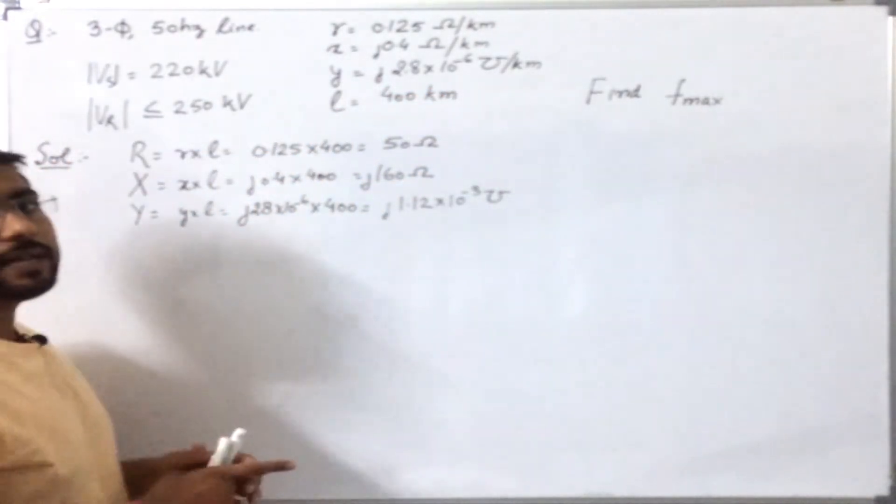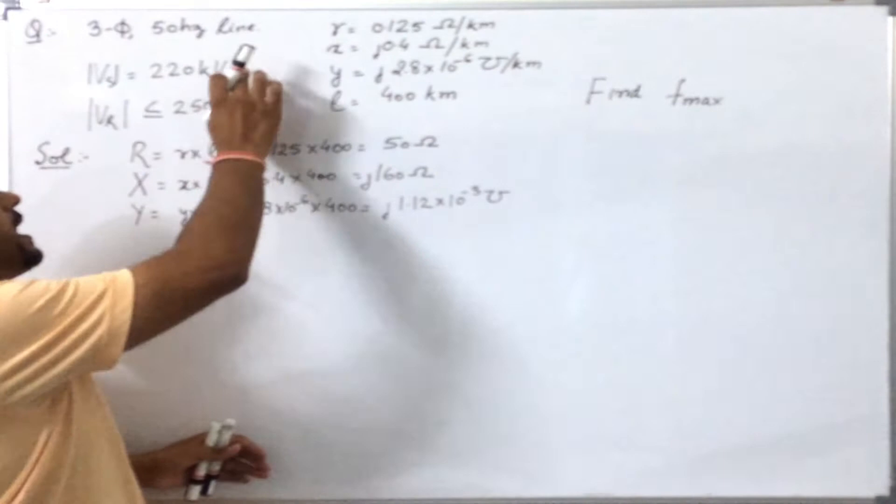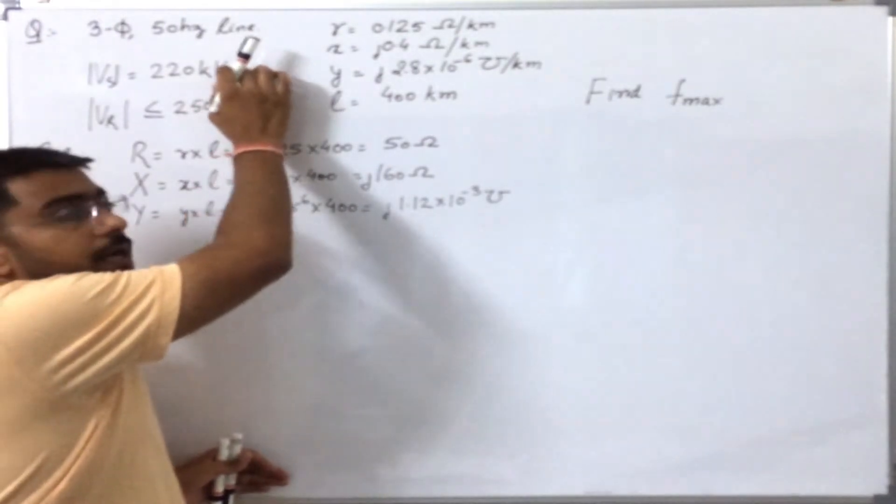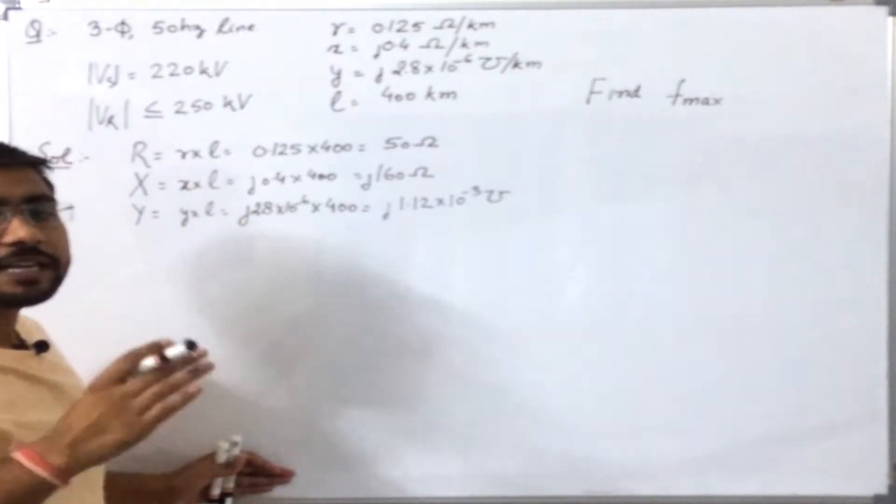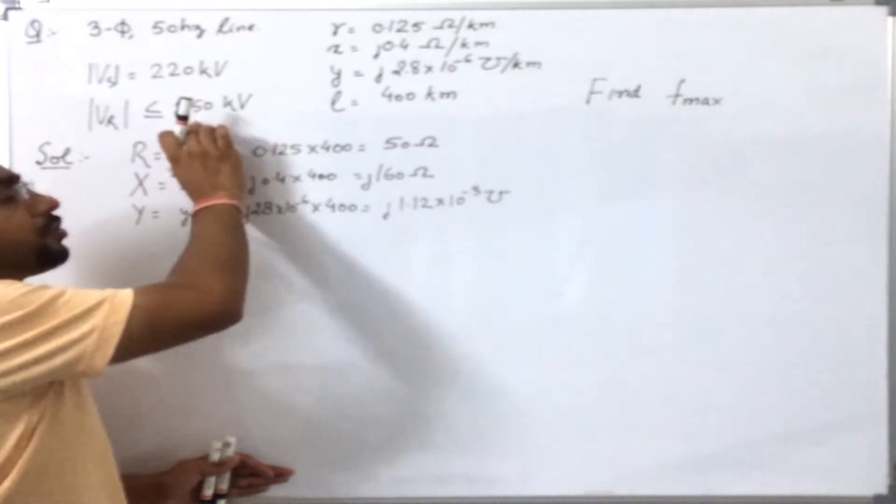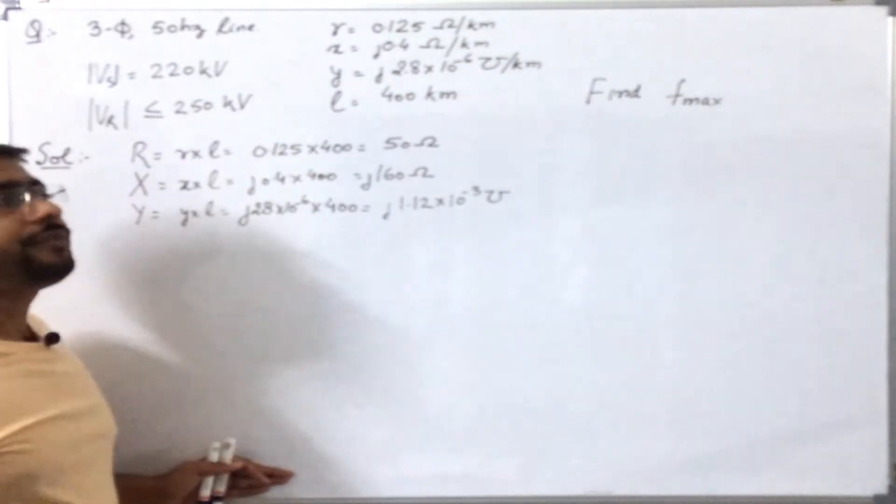We are also given that the sending end voltage is at 220 kV level and the receiving end voltage cannot exceed 250 kV. It should be less than or equal to 250 kV.